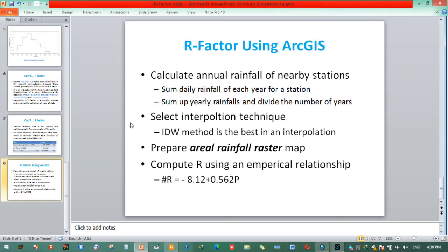The final part is determining R factor using ArcGIS. This involves the following steps. The first one is we need to calculate annual rainfall of nearby stations. We need to prepare stations, select stations more than five for better interpolation. It will be good to have as many stations as possible. These calculations of mean annual rainfall of nearby stations include the following steps.